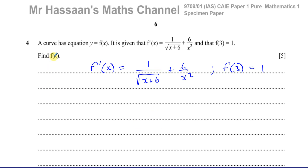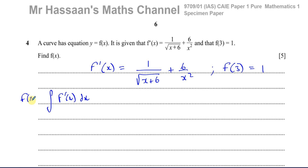These are the two bits of information we're given and we've got to find the equation of f of x. If we want to find what f of x is and we know the differential of f of x, we have to do the opposite of differentiation, which is integration. So we need to find the integral of f'(x) with respect to x, and that's what's going to give us f of x.